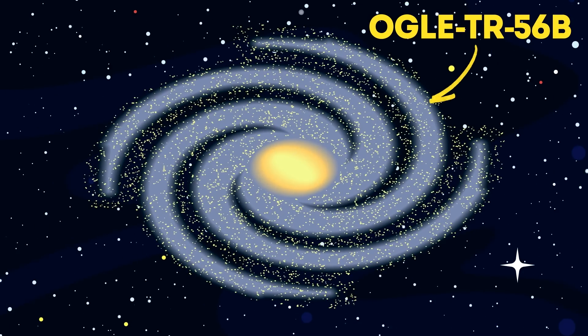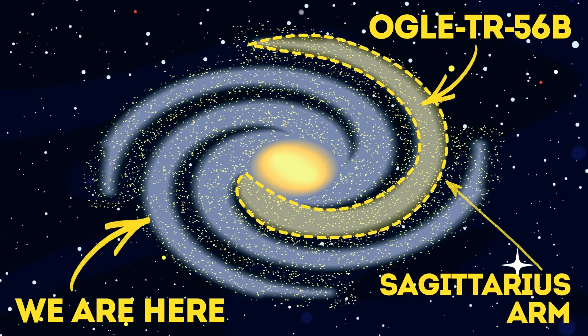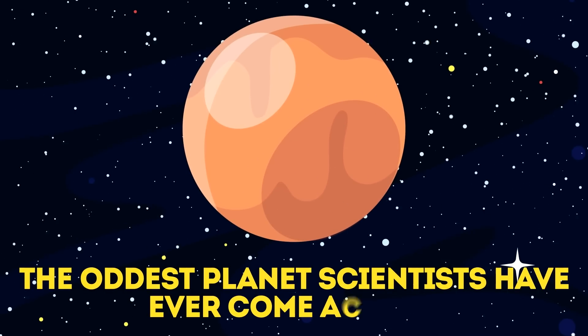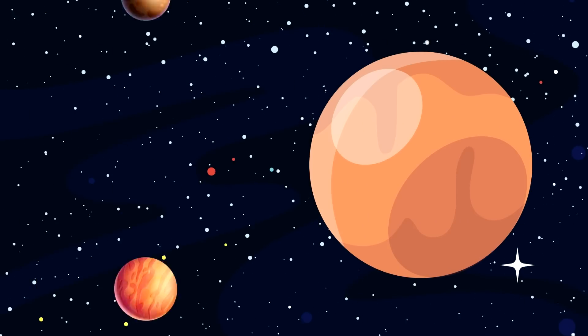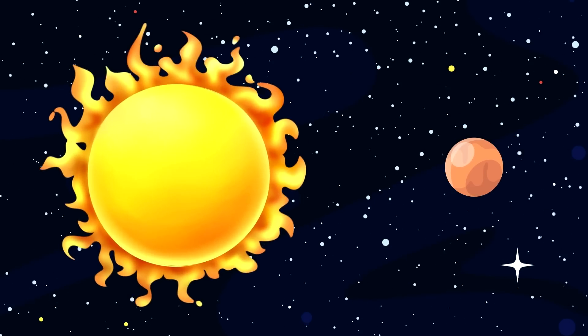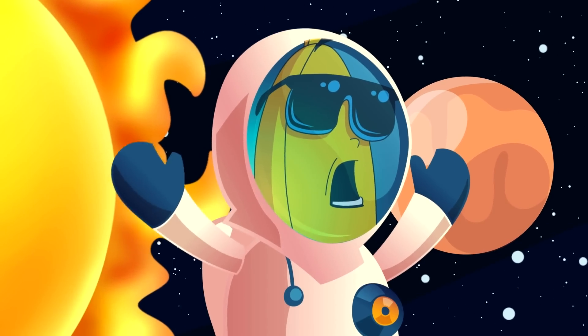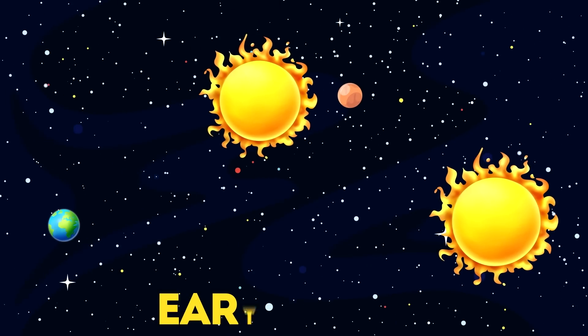Iron. Ogle TR 56b is located 5,000 light-years away in the Sagittarius arm of the Milky Way. It is probably the oddest planet scientists have ever come across. It is more than 20 times farther away than any currently known planet orbiting a normal star. The newfound planet is also unique because it orbits closer to its star than any other known planet, 50 times closer than Earth is to the Sun.